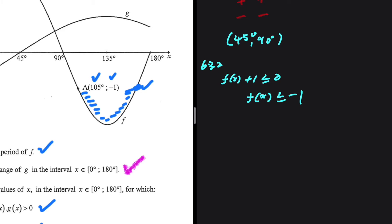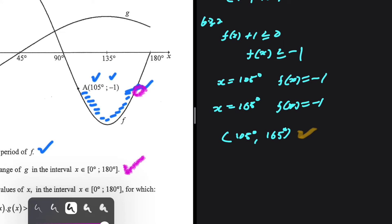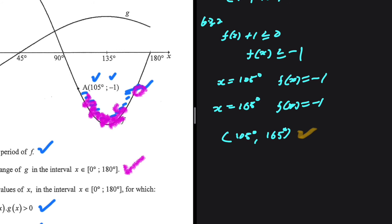Our answer starts at x = 105°, since f(105°) = -1. We need another x value where f(x) = -1. Working with the x values — 105 + 60 = 165 — when x = 165°, f(x) = -1. So the solution is 105° ≤ x ≤ 165°, where f(x) ≤ -1 as required.